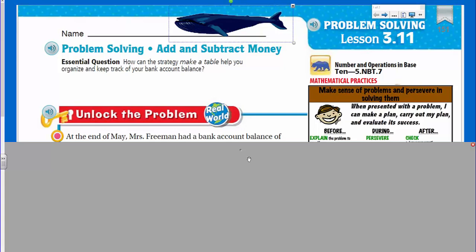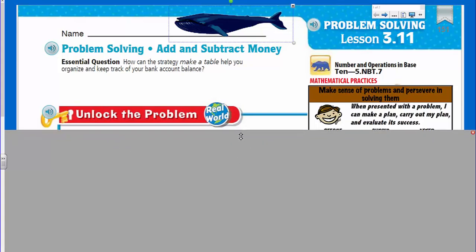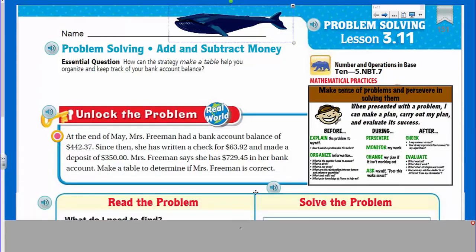It says we're going to be looking at some problem solving. We're adding, subtract money. Oh cool, we just did that recently, huh, with our whole J.A. Biz town. Yeah, deal with some money. The essential question says, How can the strategy make a table help you organize and keep track of your bank account balance? I'm probably coming handy there in Mr. Warra's class.